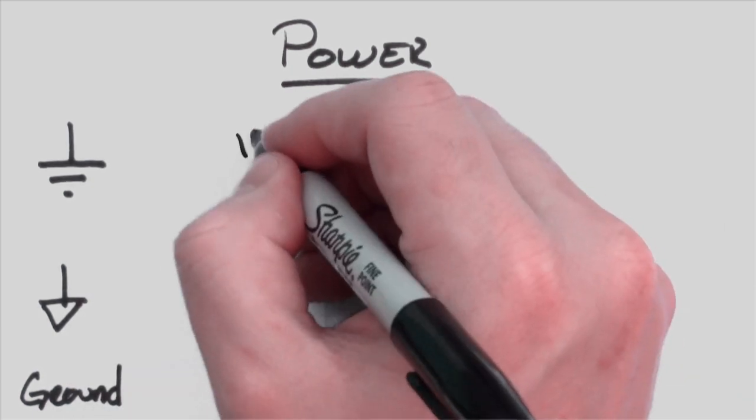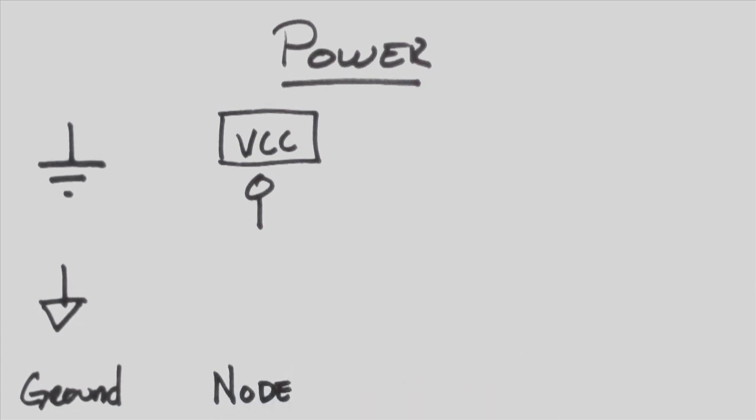A circle and the name of the node is a common way to draw power nodes. Here we're shown VCC, or you could have just put the voltage there instead.